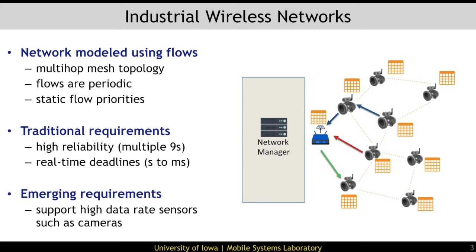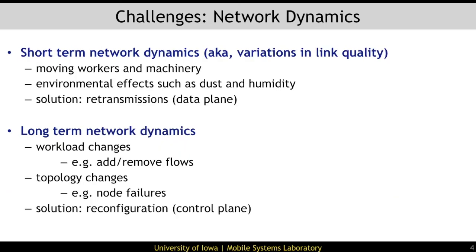In years past, satisfying these requirements would meet the needs of most applications. However, with the increasing sophistication of sensors used in industry, such as the inclusion of cameras and microphones, it is essential that wireless networks are able to support increasingly higher data rates. Supporting higher data rates without losing reliability or real-time performance is particularly challenging for industrial wireless networks due to network dynamics. Network dynamics typically come in two forms: short-term and long-term.